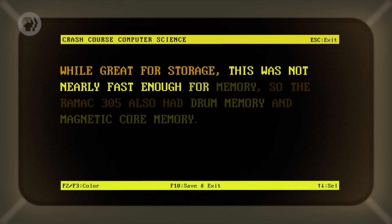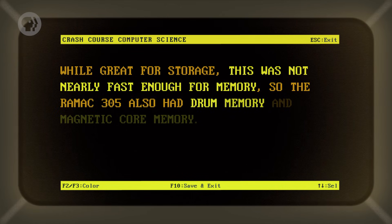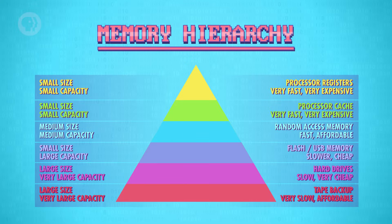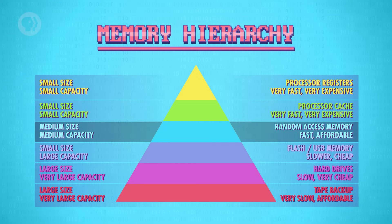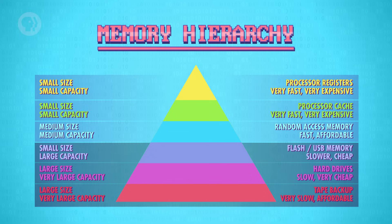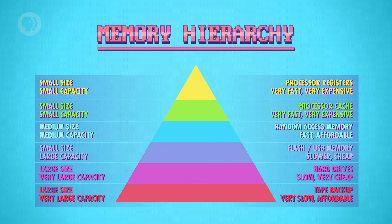While great for storage, this was not nearly fast enough for memory. So the Ramac 305 also had drum memory and magnetic core memory. This is an example of a memory hierarchy, where you have a little bit of fast memory which is expensive, slightly more medium-speed memory which is less expensive, and then a lot of slowish memory which is cheap. This mixed approach strikes a balance between cost and speed. Hard disk drives rapidly improved and became commonplace by the 1970s. A hard disk drive like this can easily hold one terabyte of data today — that's a trillion bytes, or roughly 200,000 five-megabyte photos — and can be bought online for as little as 40 US dollars. That's 0.0000000005 cents per bit, a huge improvement over core memory's 1 cent per bit.